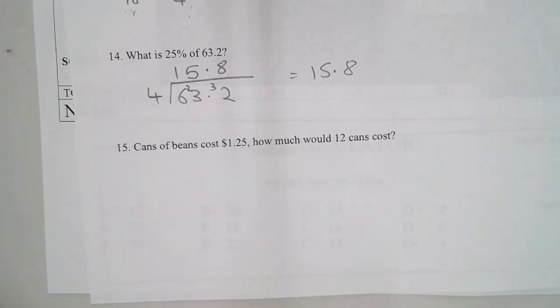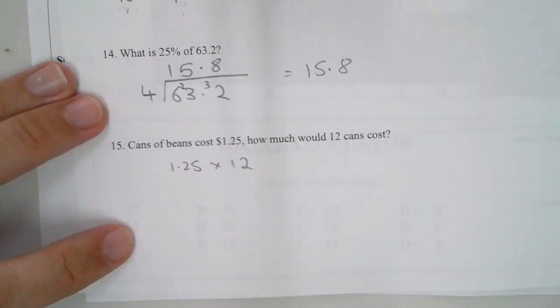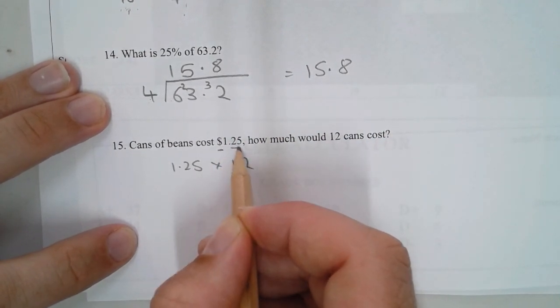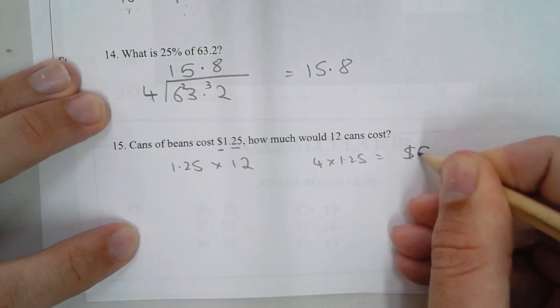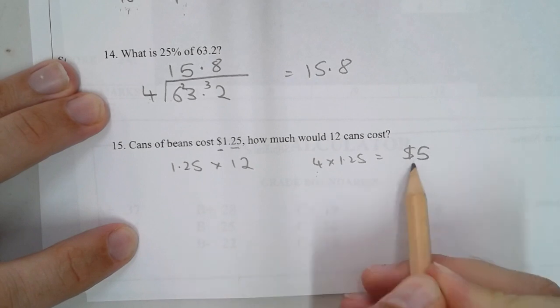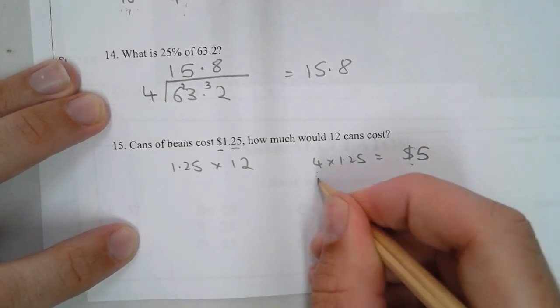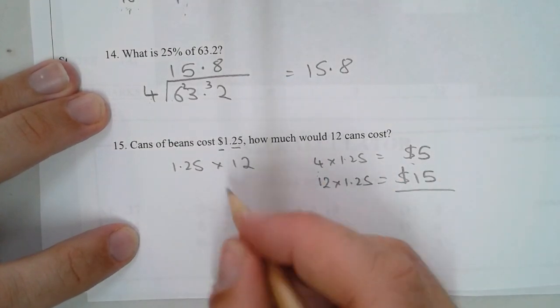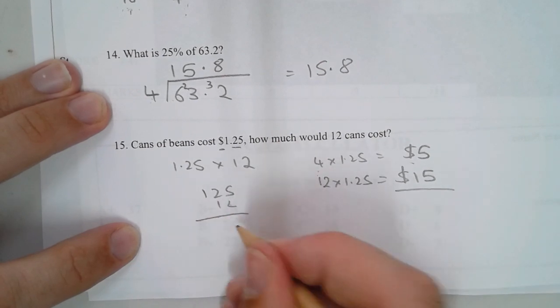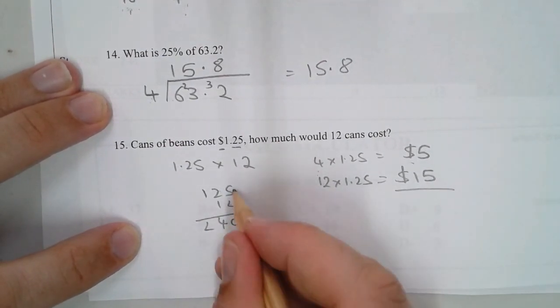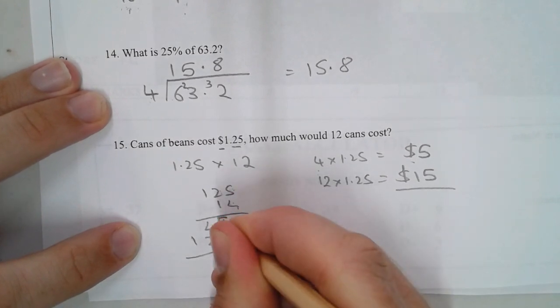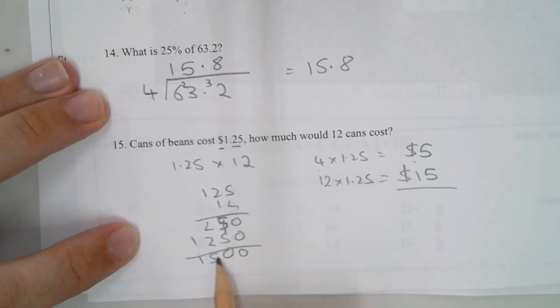Number 15: 15 cans of beans cost $1.25. How much would 12 cans cost? What I'm going to do is multiply by 4: 4 times $1.25 equals $5, so that's how much 4 cans would cost. 12 is three times more than that, so $15. If you weren't following that, you could do 1.25 times 12. 5 times 2 is 10, 2 times 2 is 4, carry the 1 is 5. Add it up and you get $15.